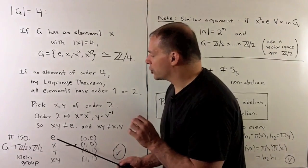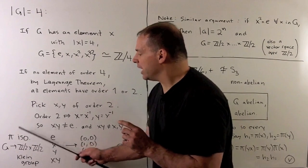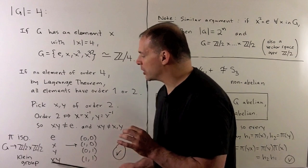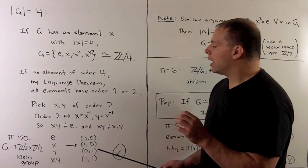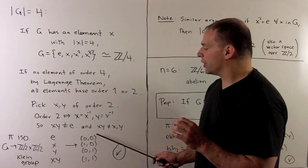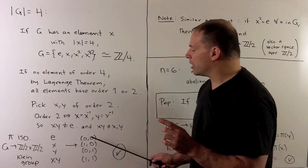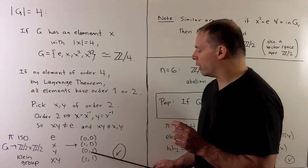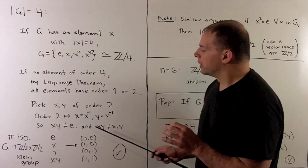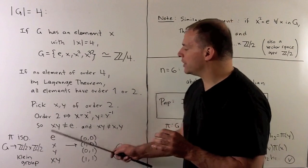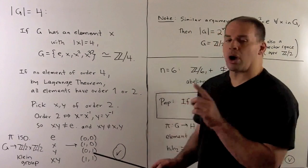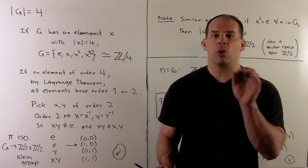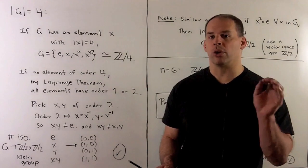We construct an isomorphism between G and Z2 × Z2 — this group gets the special name Klein group. We send the identity to (0,0), X to (1,0), and Y to (0,1), which forces XY to go to (1,1). It's straightforward to check this is a homomorphism, giving our isomorphism. That takes care of all isomorphism classes when the order of the group is 4.